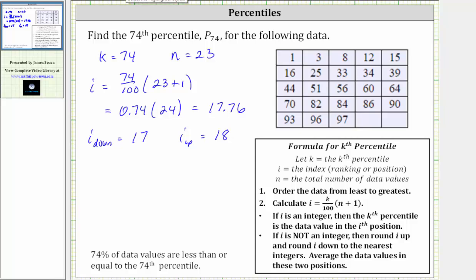So going back over to the table, we have five, 10, 15... 70 is in the 16th position, and therefore 82 is in the 17th position, and 84 is in the 18th position.